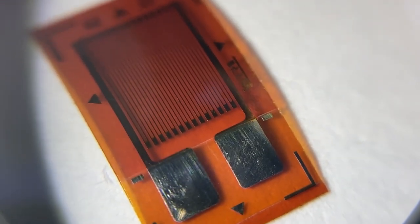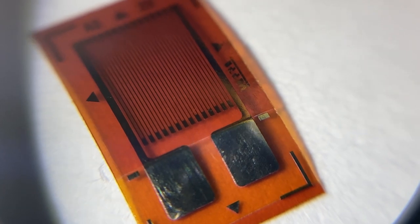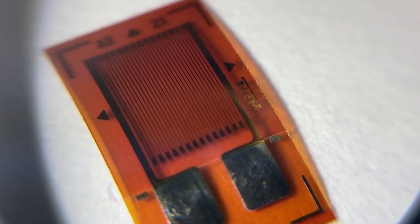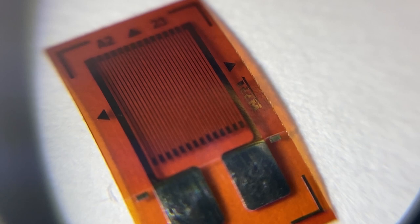If we now zoom in on the actual strain gauge itself, what we can see is a load of wire which is basically going up and down many times. At the bottom of that there are two terminals, and that's where we can connect this piece of wire into a circuit.